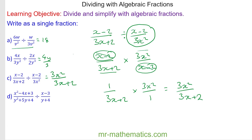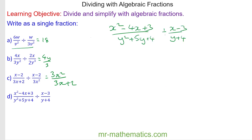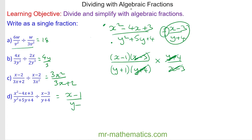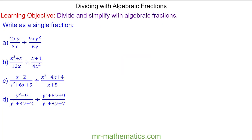For question d, pause the video and try it yourself. Okay, so we factorize the numerator and denominator. We have x minus 1 lots of x minus 3 over y plus 1 and y plus 4, and that is multiplied by the reciprocal of the second fraction, which is y plus 4 over x minus 3. The x minus 3 terms cancel and the y plus 4 terms cancel, leaving x minus 1 over y plus 1.